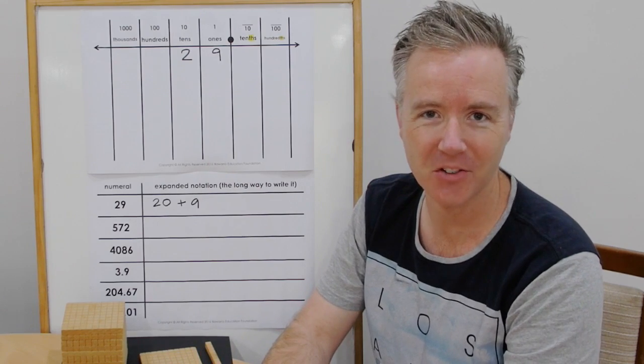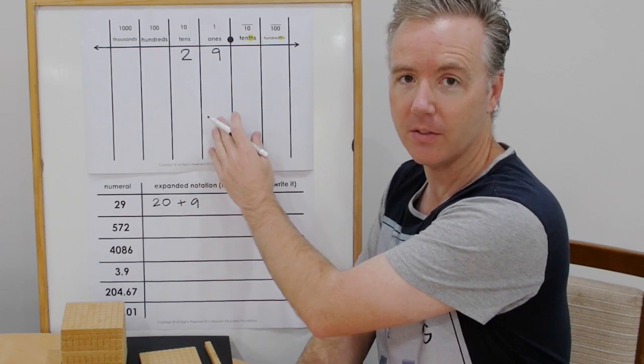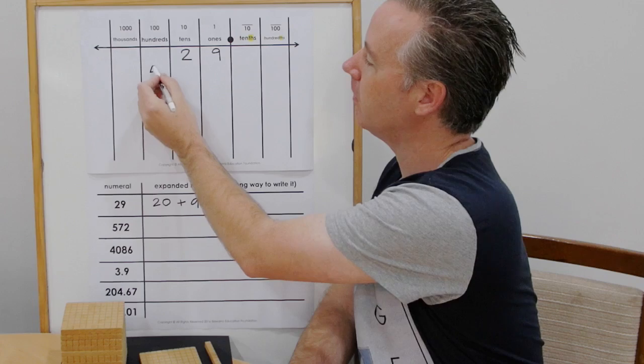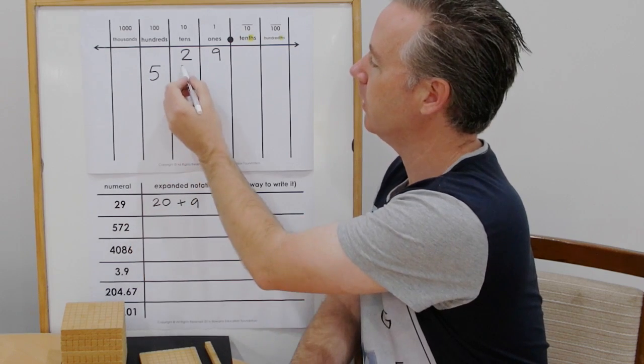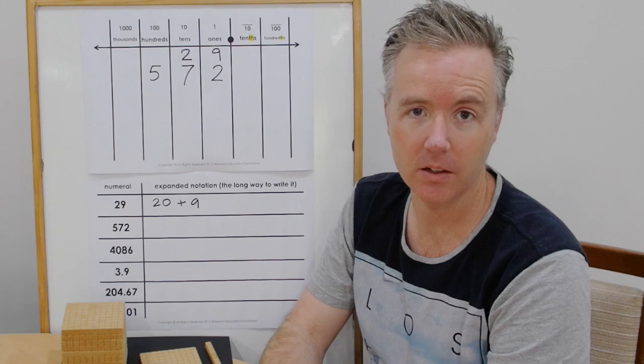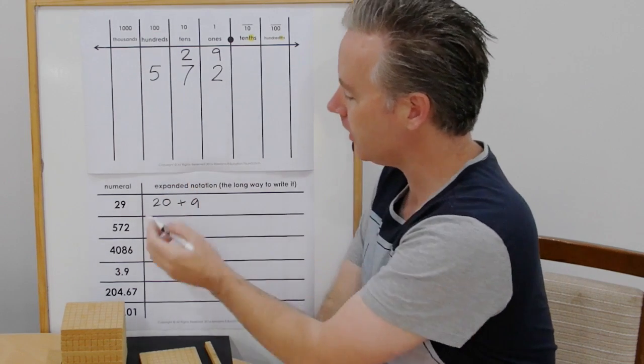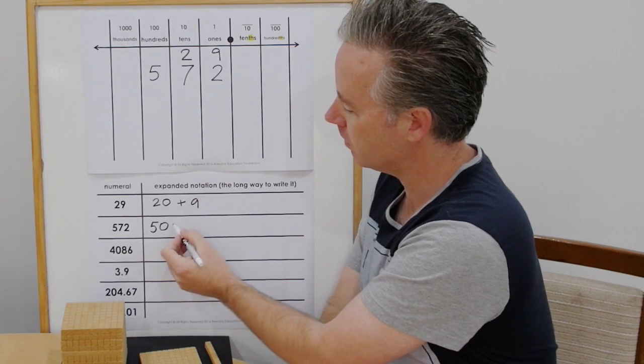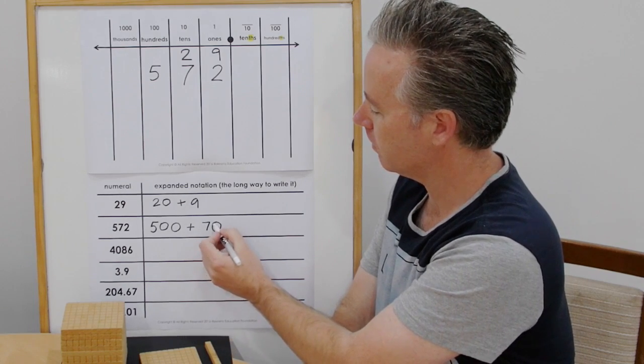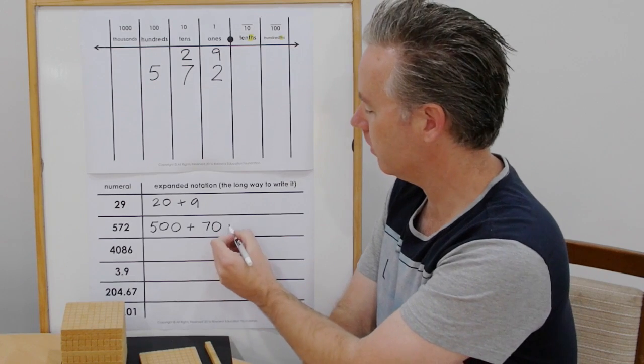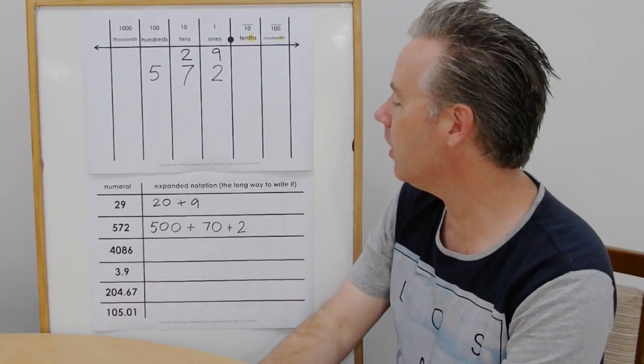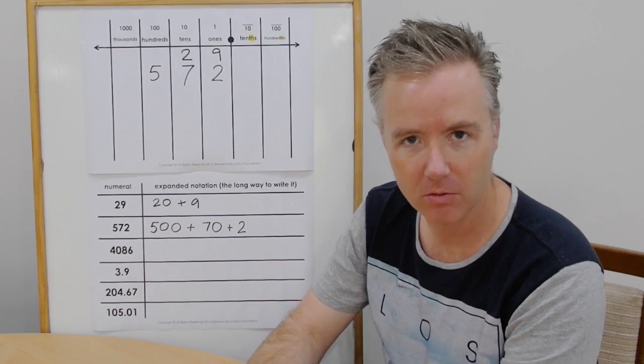The next numeral is five hundred and seventy-two. Let's write that on our place value chart. Five hundred. So find the hundreds column. Seventy-two. Seven tens. Two ones. Five hundred and seventy-two. Let's now write that out in expanded notation. We have five hundreds, plus seven tens, and two ones. So five hundred and seventy-two is five hundred plus seventy plus two. Write that in now.